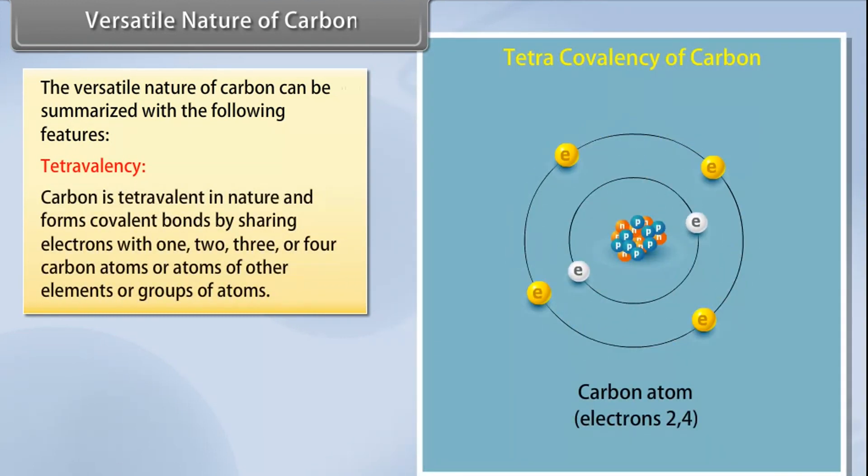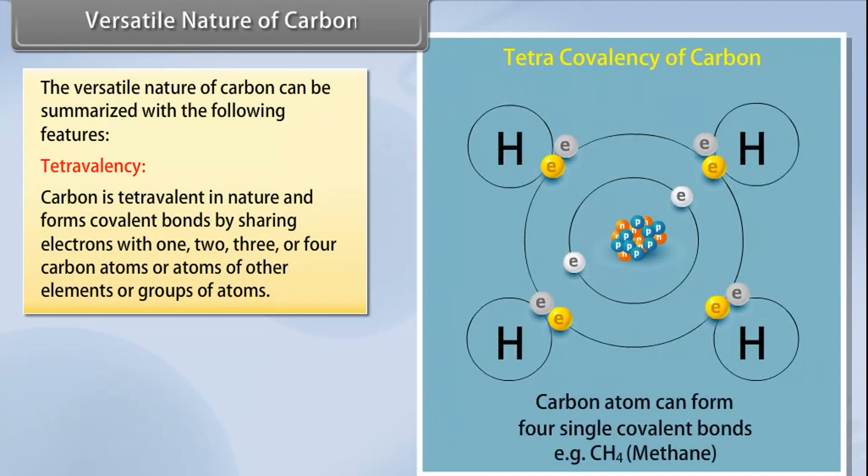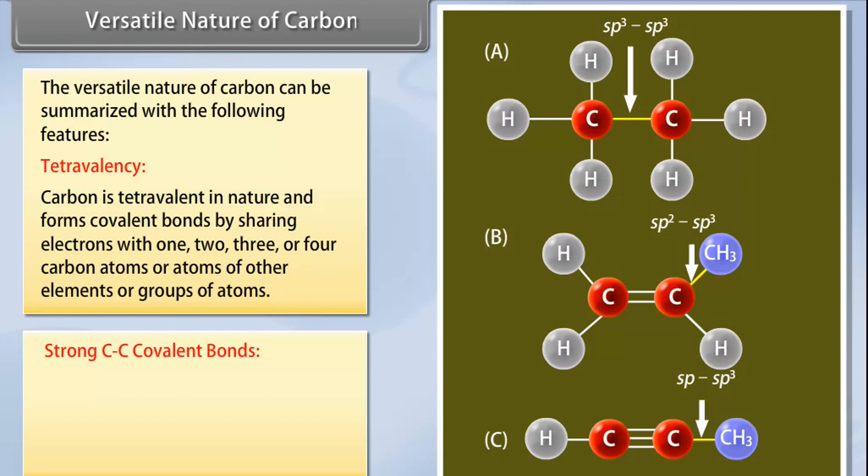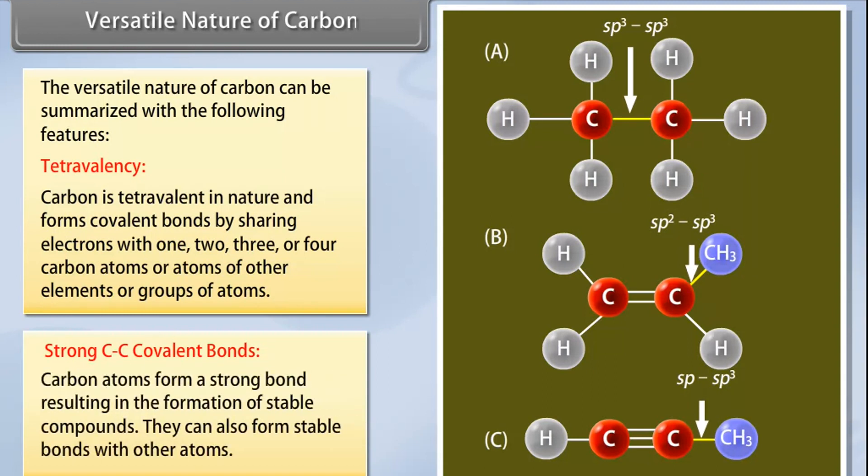Tetravalency: Carbon is tetravalent in nature. It always forms covalent bonds by sharing electrons with 1, 2, 3, or 4 carbon atoms or atoms of other elements or groups of atoms. Strong carbon-carbon covalent bonds result in the formation of stable compounds. Carbon atoms can also form stable bonds with other atoms.